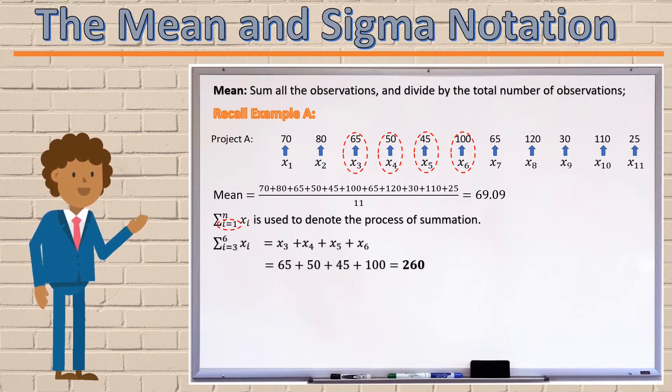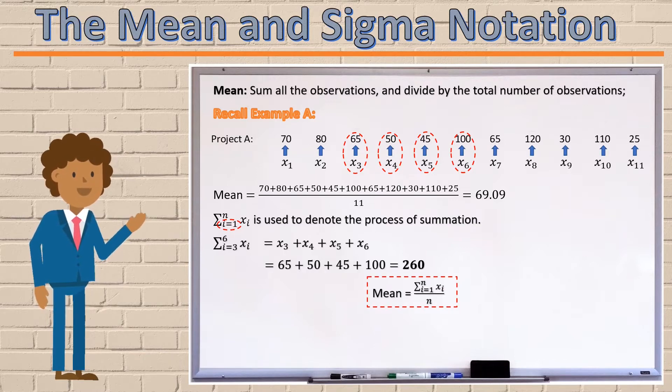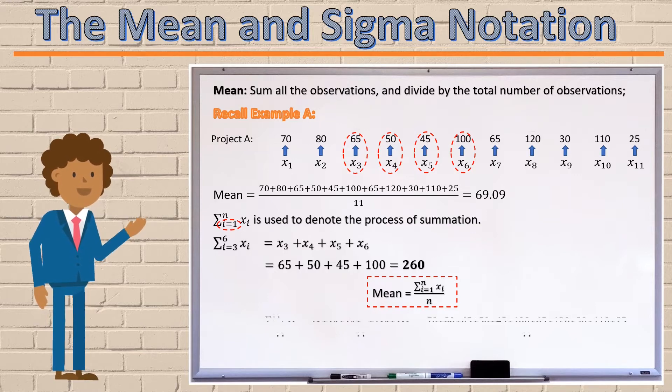We can therefore write the process of calculating the mean as the sum, or sigma, i equals 1 all the way to n, of all of your xi's divided by the total number of xi's, which is n. So the expression above, in this example, would translate into the sum from i equals 1 to 11 of the xi's, divided by the total number of xi's, which would just be 11. So then we'd add x1 plus x2 all the way up to x11, divided by 11, and this would work out to be 69.09 as before.